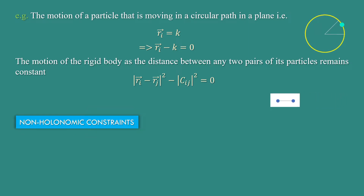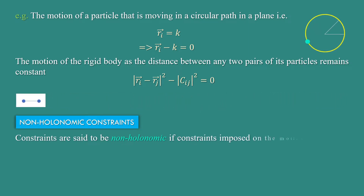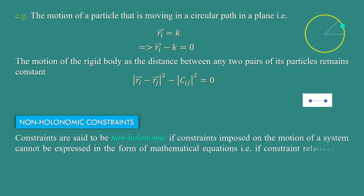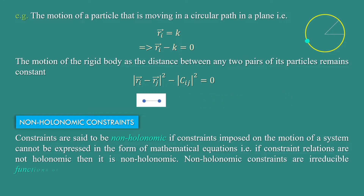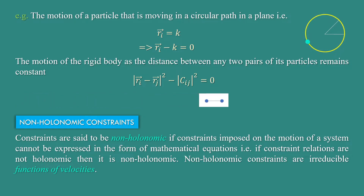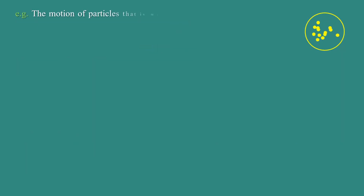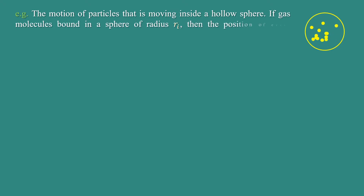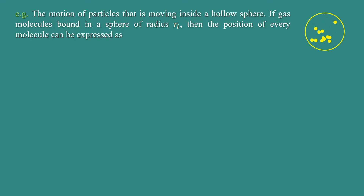Non-holonomic constraints: constraints are said to be non-holonomic if the constraints imposed on the motion of a system cannot be expressed in the form of mathematical equations. If constraint relations are not holonomic, then they are non-holonomic. Non-holonomic constraints are irreducible functions of velocities. For example, the motion of particles moving inside a hollow sphere — if gas molecules are bound in a sphere of radius r, then the position of every molecule can be expressed as rᵢ ≤ k.